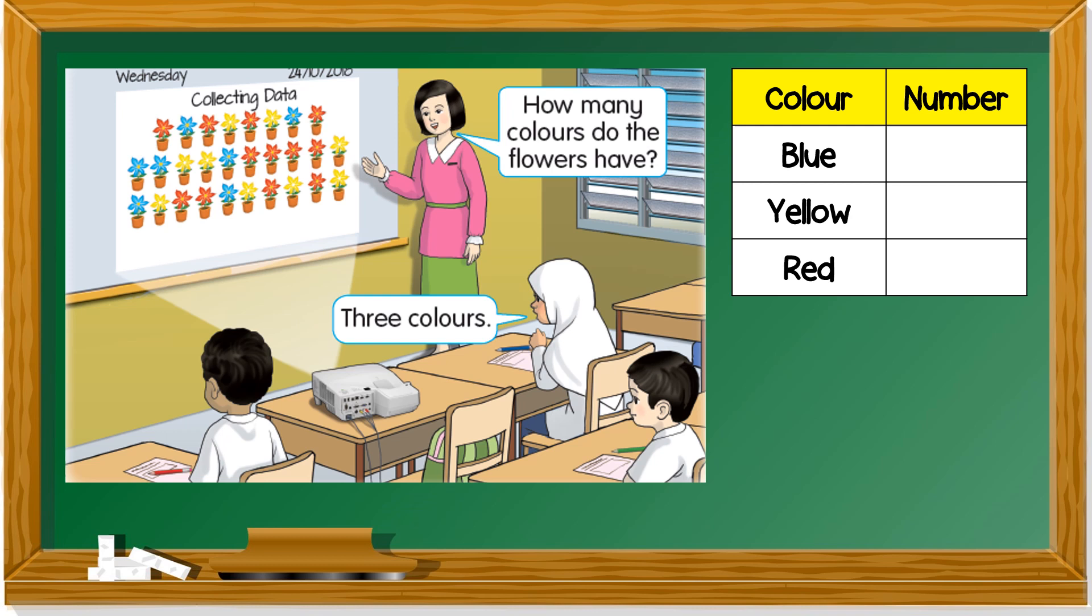Blue, yellow and red. Let's count the blues. One, two, three, four, five, six, seven. So, there are seven blues.